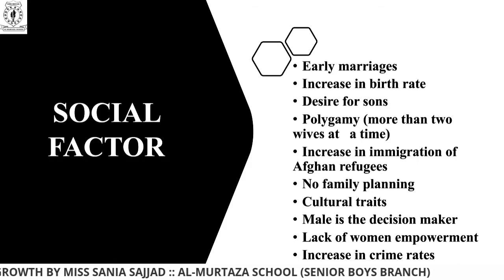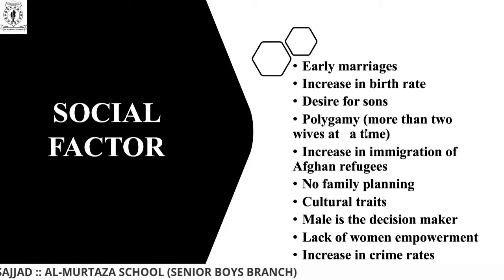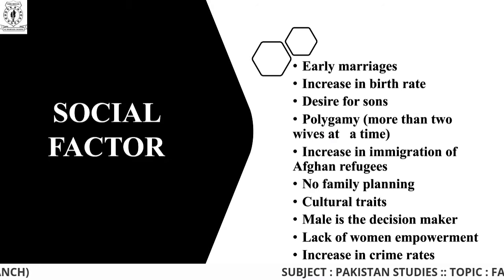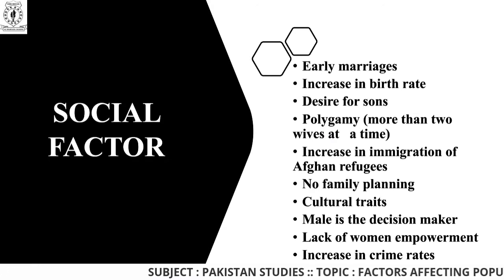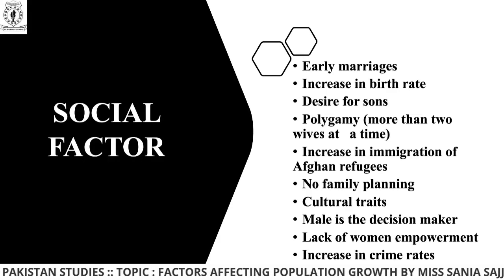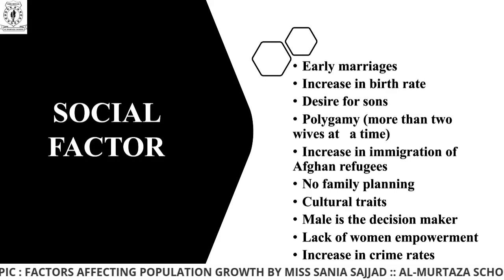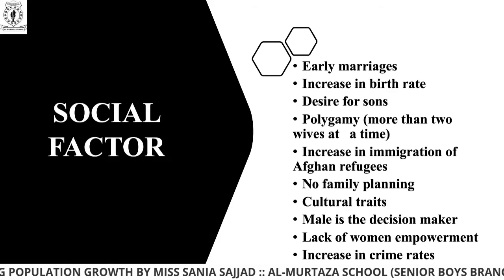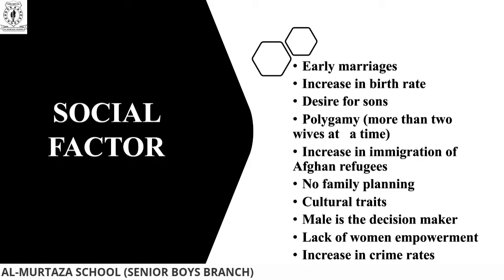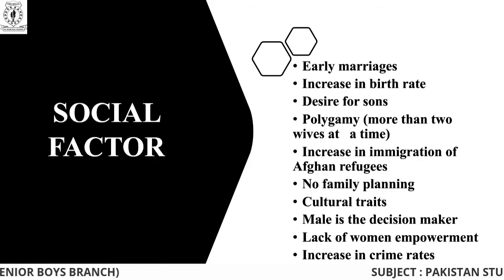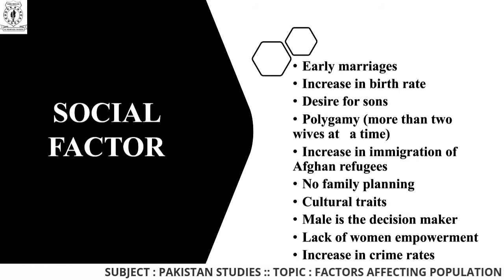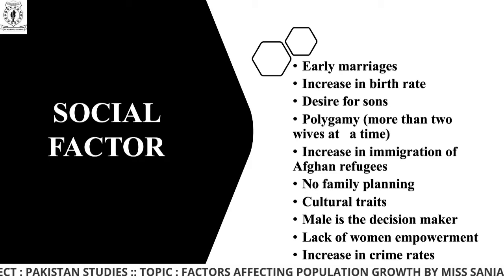The next social factor is polygamy — having more than one wife at a time. Polygamy is still present in our society. Regarding the current situation in Pakistan, a law was declared in 2020 that if you want to have another wife, you can do so legally.